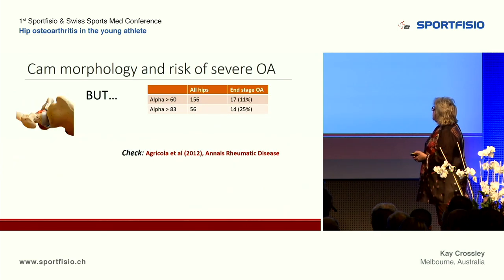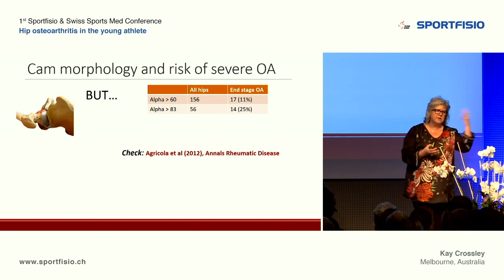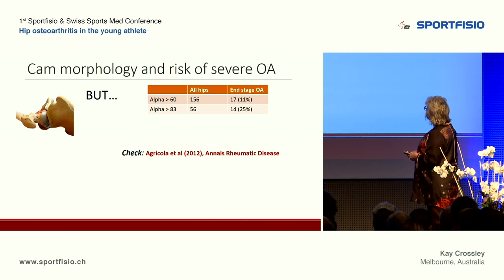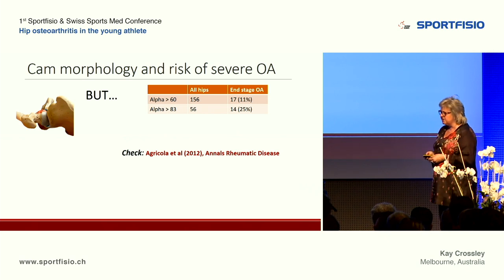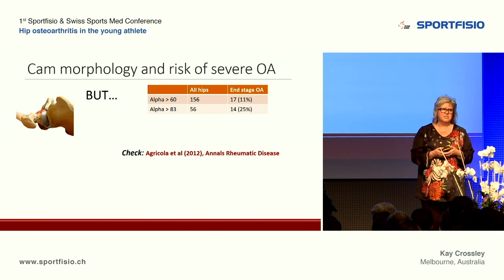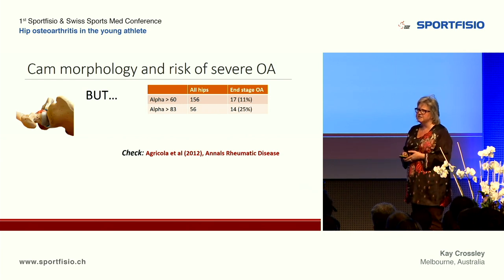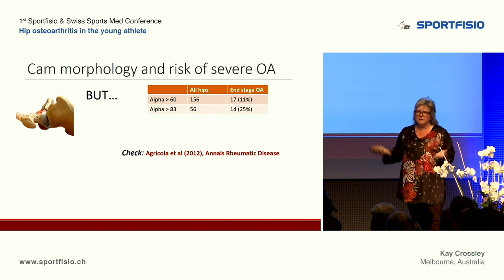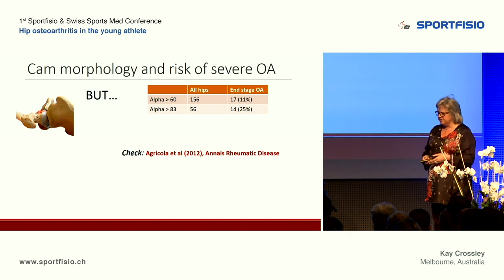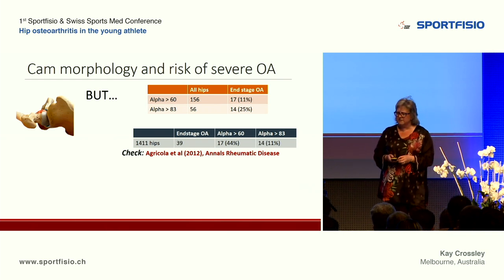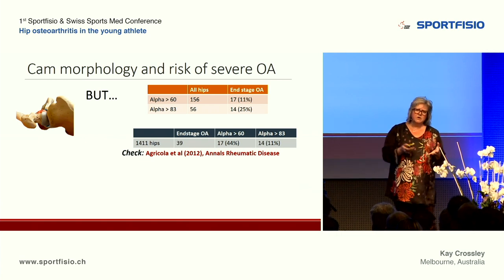There is definitely an increased odds of osteoarthritis in people with CAM morphology, but these studies were done in population samples — not athletes — mostly middle-aged people in their 40s and 50s. Looking at absolute risk: in the Czech study, of all hips with an alpha angle greater than 60 degrees, only 11% actually went on to get end-stage hip OA. With a more severe CAM morphology of 83 degrees, that goes up to only 25%. Of the 1,411 hips, only 39 had end-stage OA.